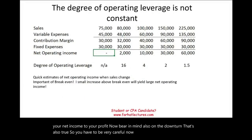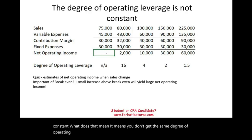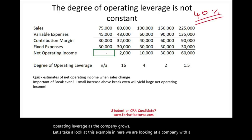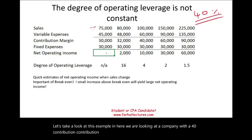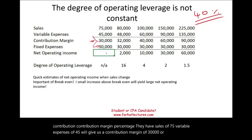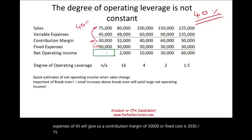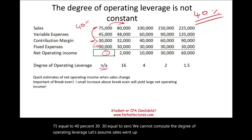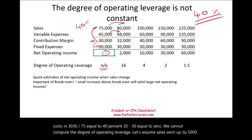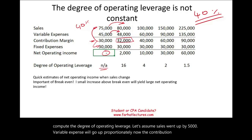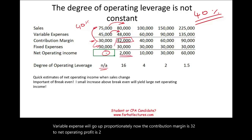The degree of operating leverage is not constant — you don't get the same DOL as the company grows. Consider a company with a 40% contribution margin percentage. With sales of $75,000 and variable expenses of $45,000, contribution margin is $30,000 and fixed cost is $30,000, giving net operating income of zero. We cannot compute the DOL at break-even. If sales go up by $5,000, variable expenses rise proportionally, contribution margin becomes $32,000, and net operating profit is $2,000. The degree of operating leverage is 32 divided by 2, which equals 16.